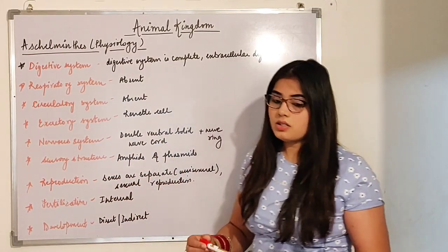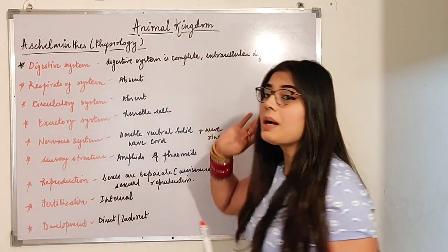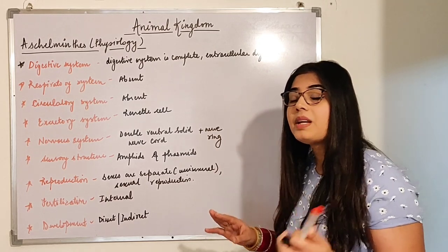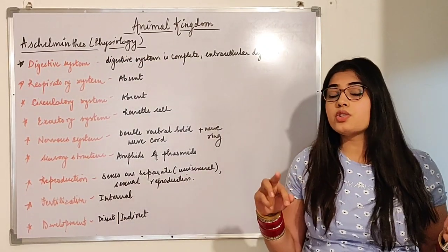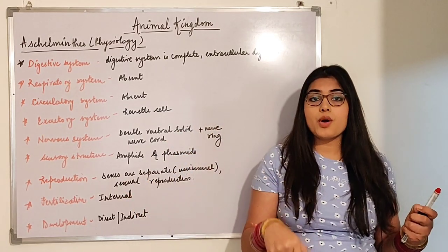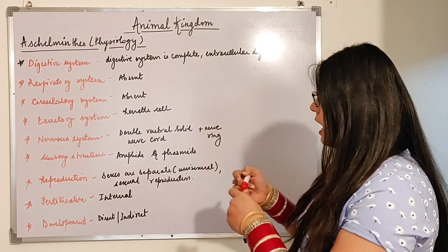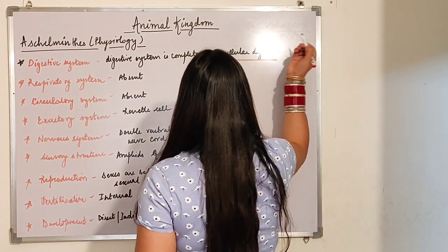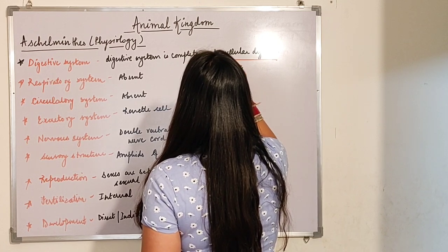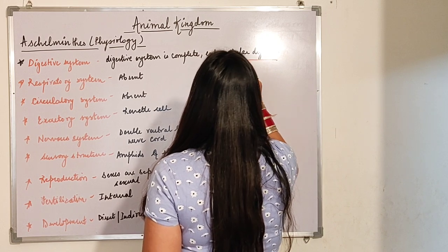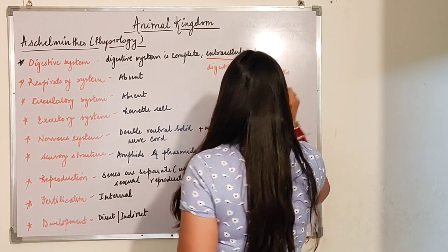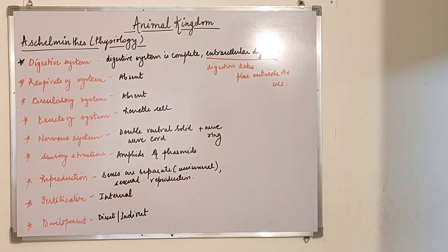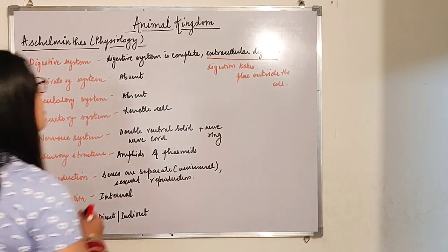Let's begin with the digestive system. The digestive system here is complete. It is an extracellular digestive system. What is the meaning of this? That digestion takes place outside the cell — that is the reason it is known as extracellular digestion, because it is taking place outside the cell.